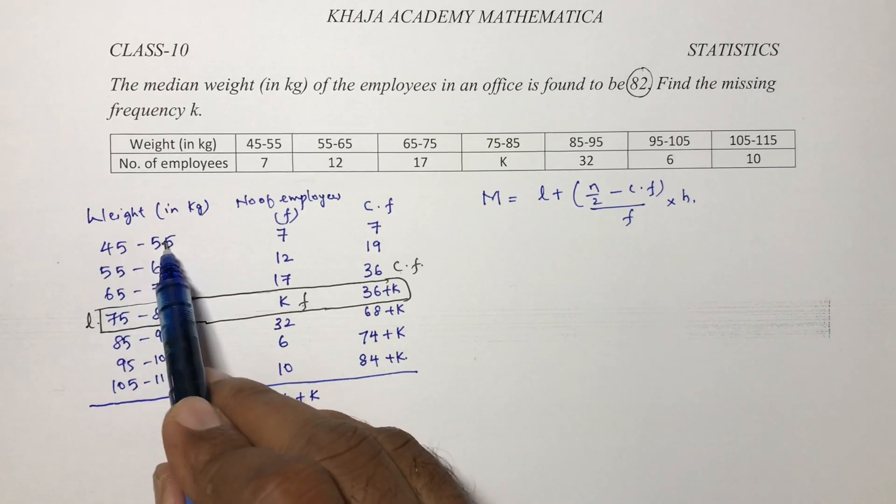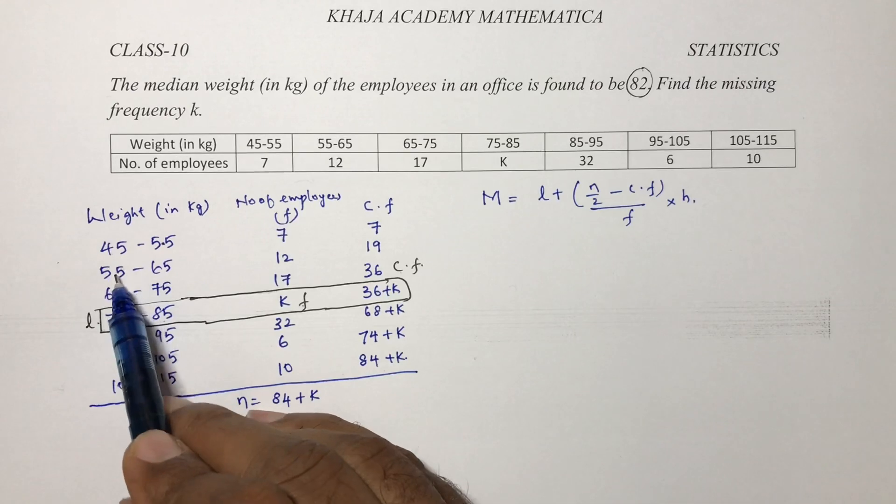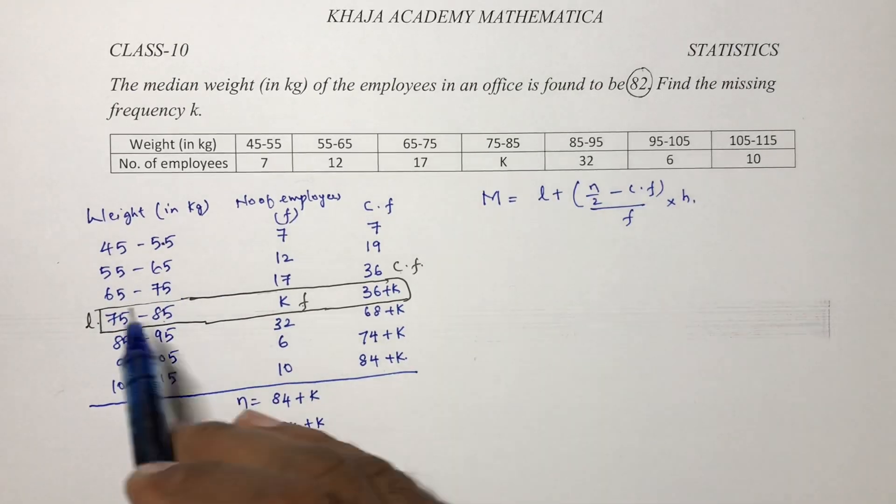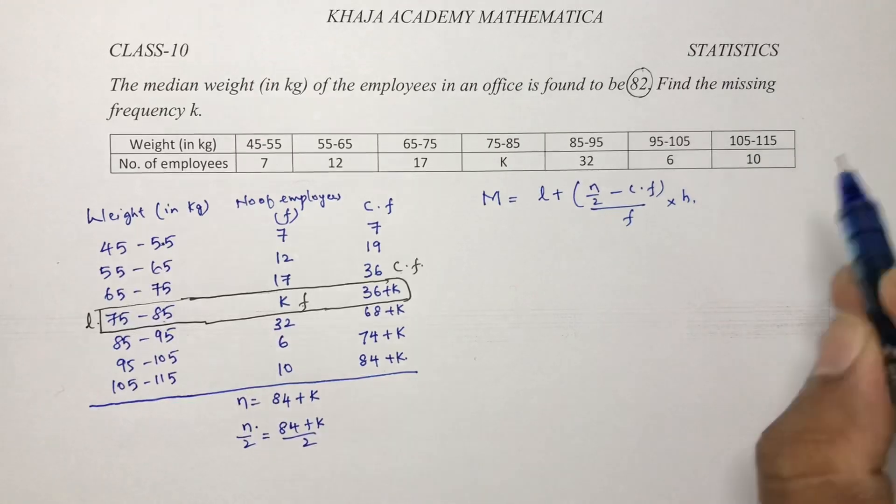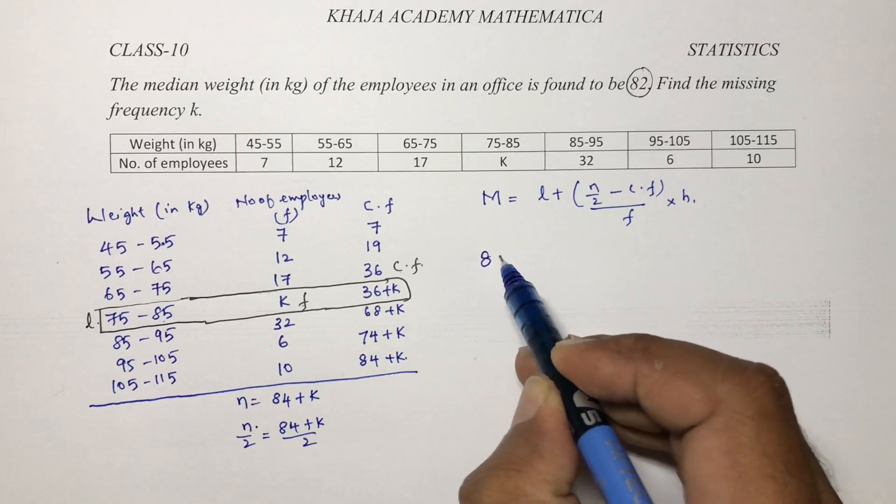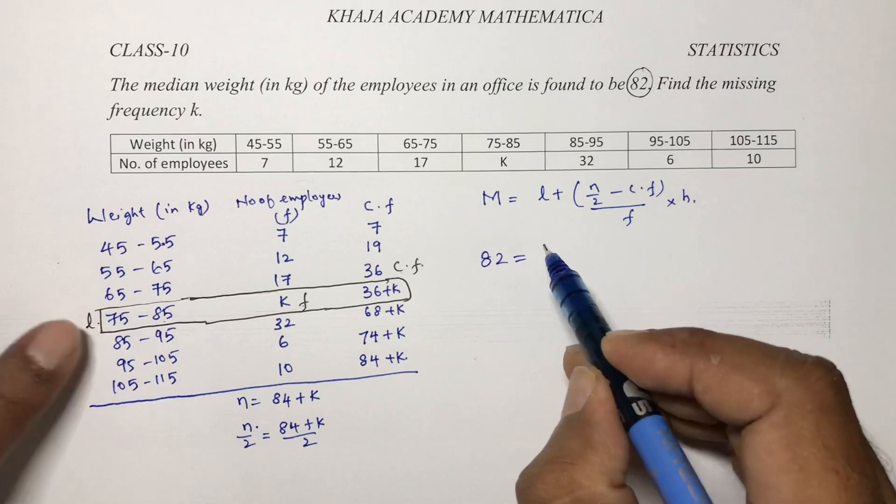Class size here is 10. Don't subtract like 55 minus 45. If it is a continuous class you can know in that way also. So h value is 10, median is 82, lower boundary is 75.